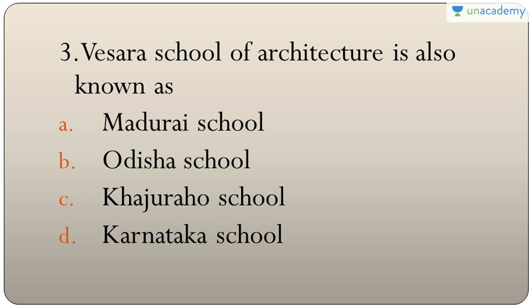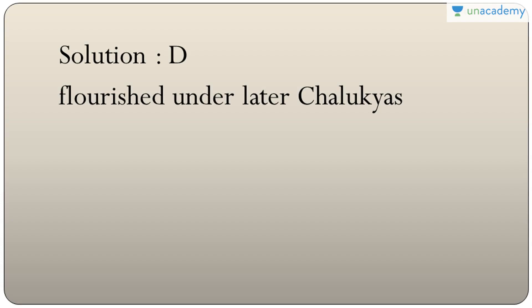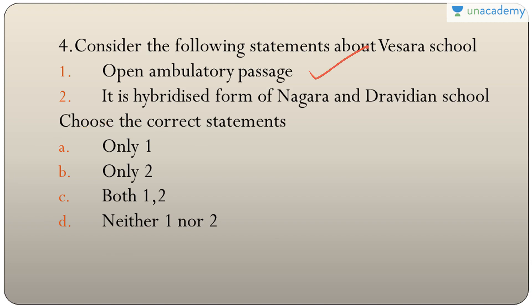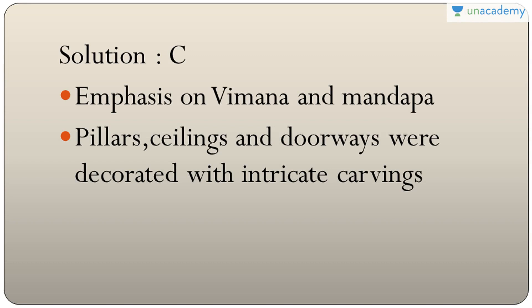Question three: Vesara school of architecture is also known as which school? The answer is D — Karnataka school, as it was developed by the later Chalukyas. Question four: statements about Vesara school — it has an open ambulatory passage and is a hybridized form of Nagara and Dravidian schools. Both are true, so the answer is C — both one and two.